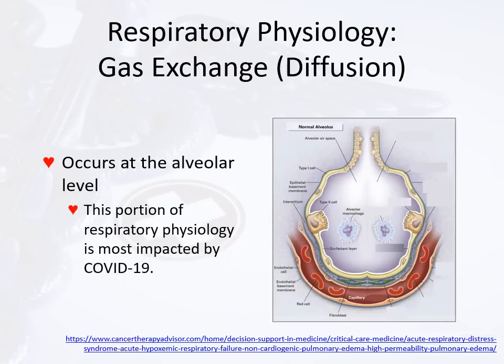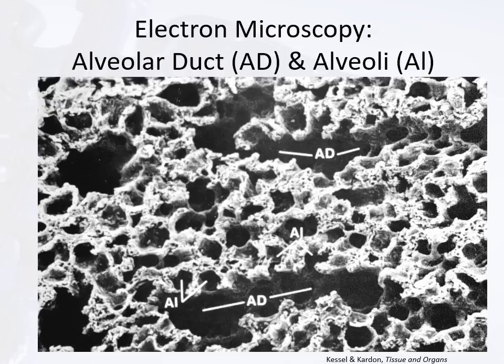Also visible in this figure is a capillary. Deoxygenated blood from the pulmonary artery comes into this capillary, and as it goes through the alveolus, it gets oxygenated.